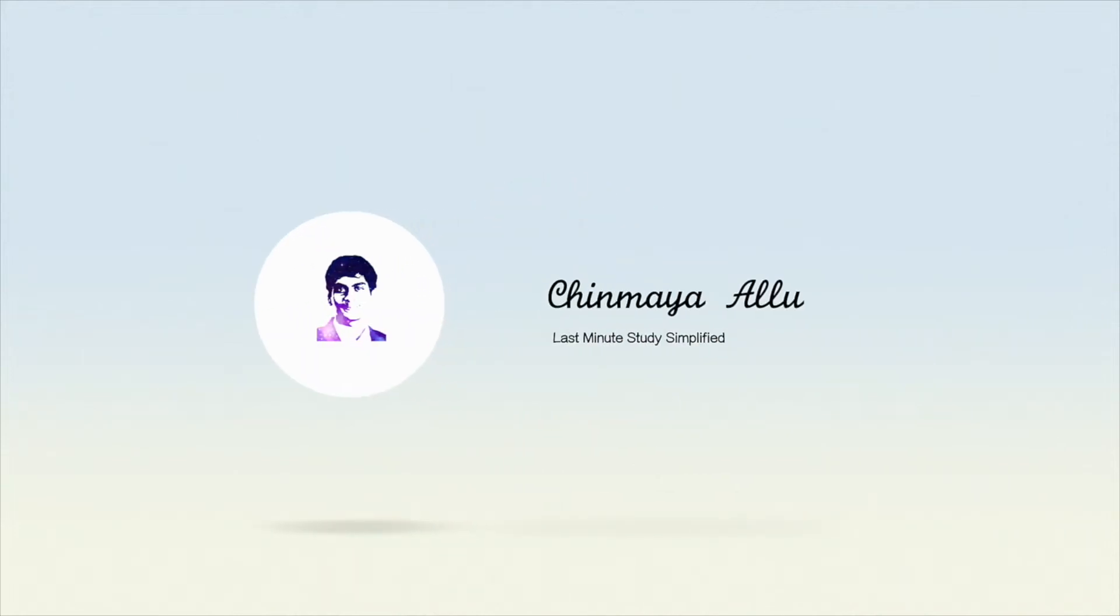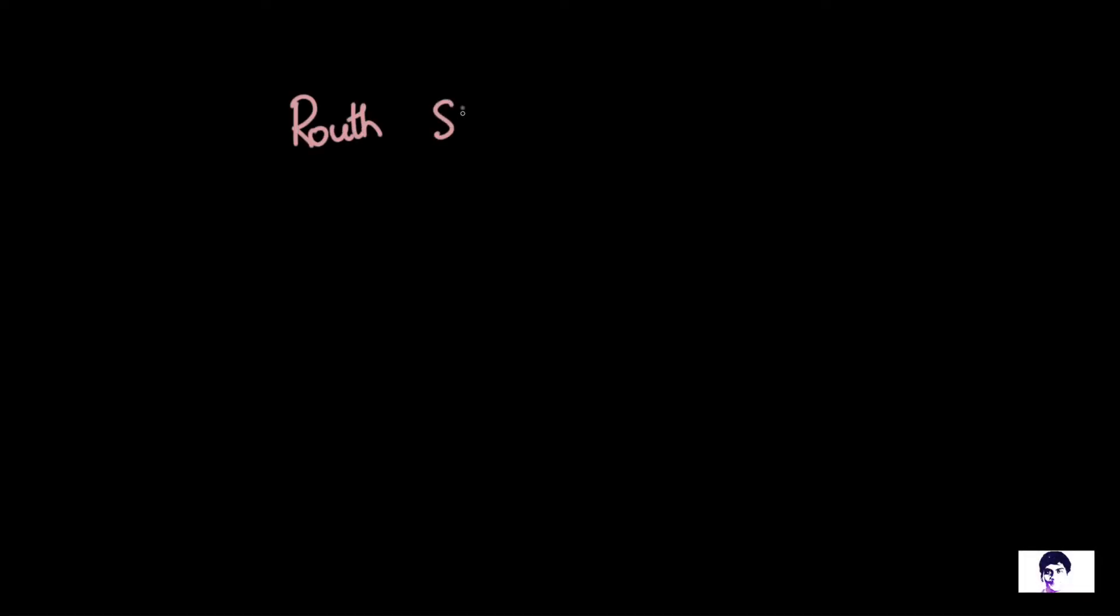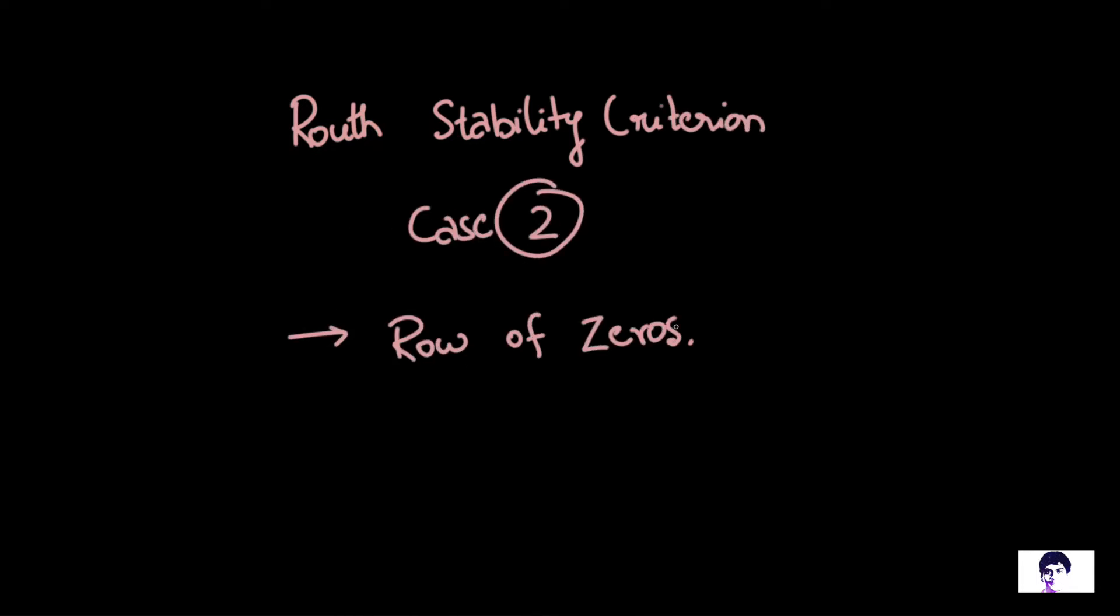Hey guys, hope you're doing great. In this video, we are going to look at solving a problem where we have a row of zeros in a Routh array. So this is referred to as Case 2. Before we jump in, I quickly wanted to brush you through the basic stability analysis.